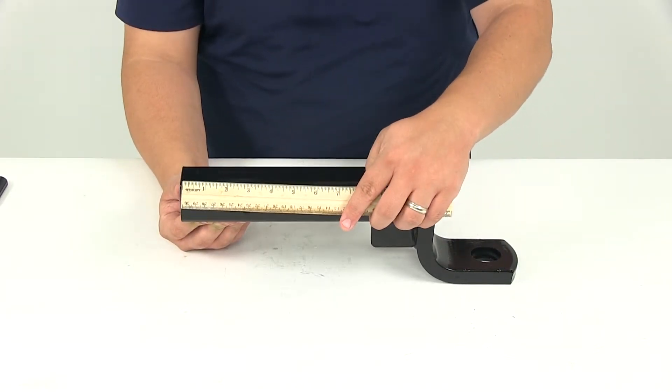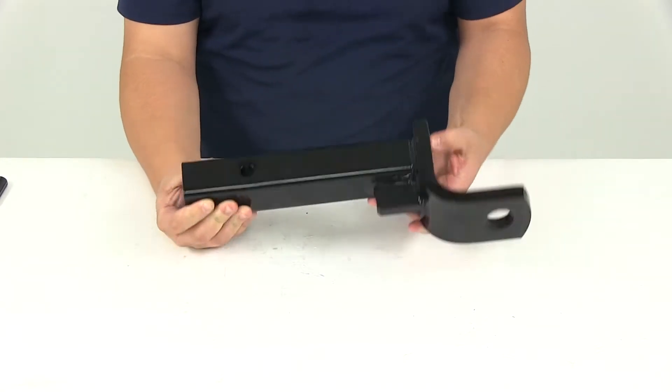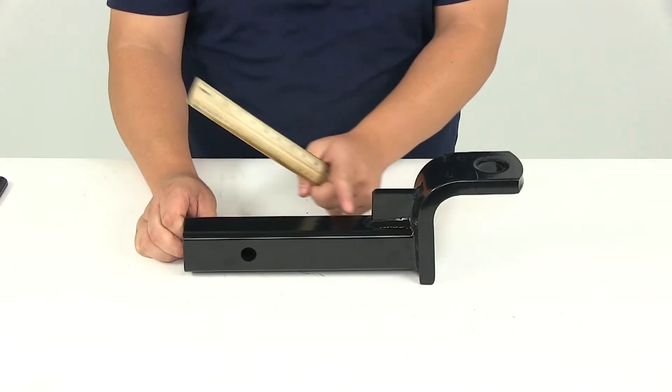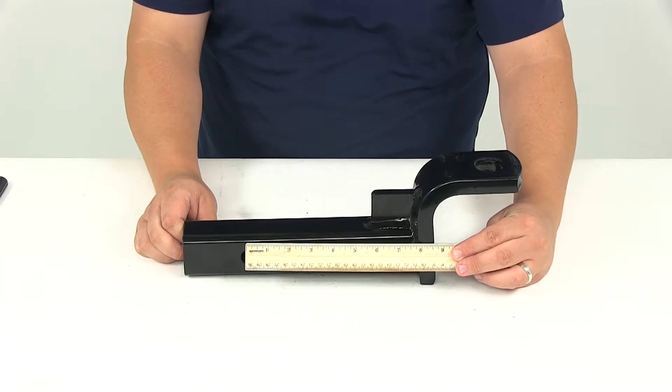The distance from the center of the hitch pinhole to the back of the shank is going to measure three inches. When used in the rise position the distance that we have from the center of the hitch pinhole to the back of the support bar is going to give us a measurement of five and a half inches.